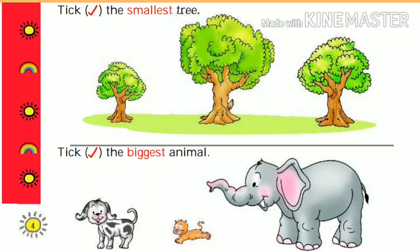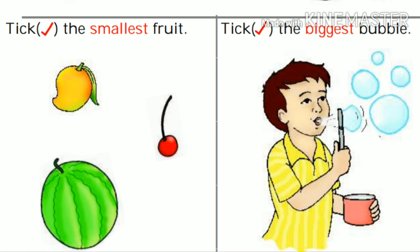Let's see some more examples. In the first question, you have to find the smallest tree. Yes, the first tree is the smallest tree. Next question: which is the biggest animal — dog, cat, or elephant? Yes, elephant is the biggest animal. Next question: take the smallest fruit — mango, watermelon, or cherry? Yes, the smallest fruit is cherry.